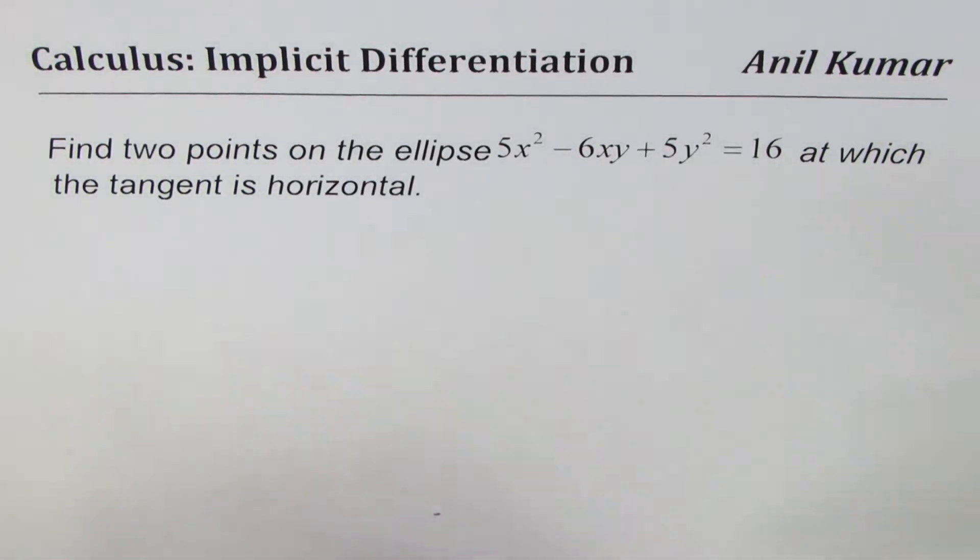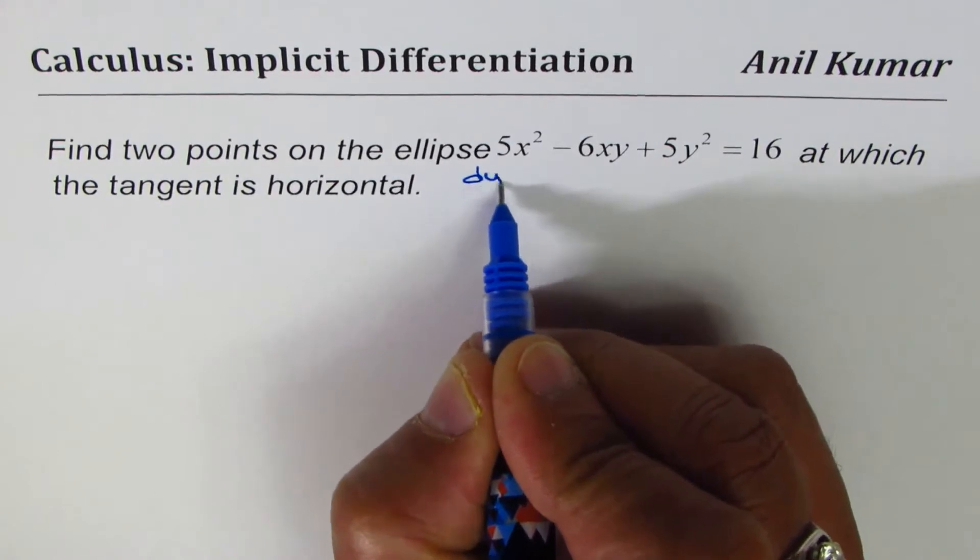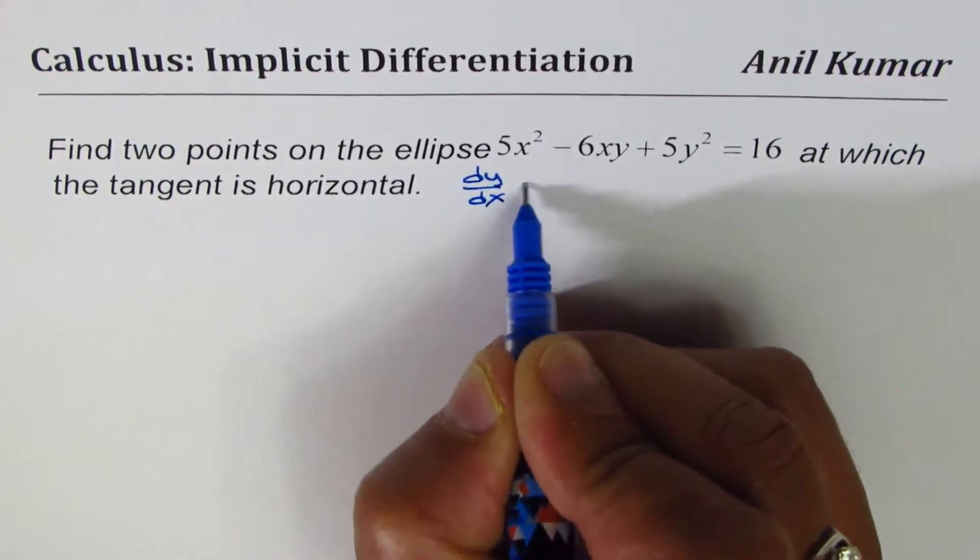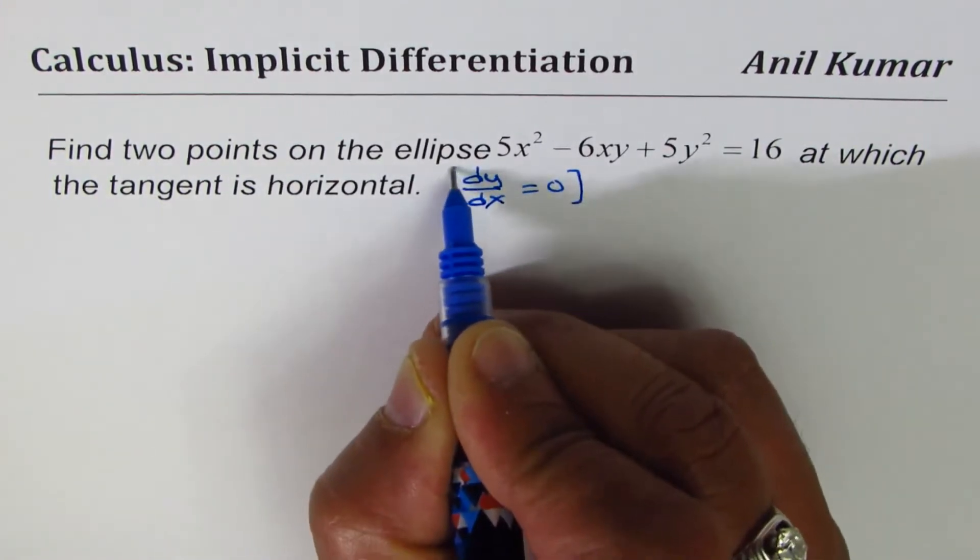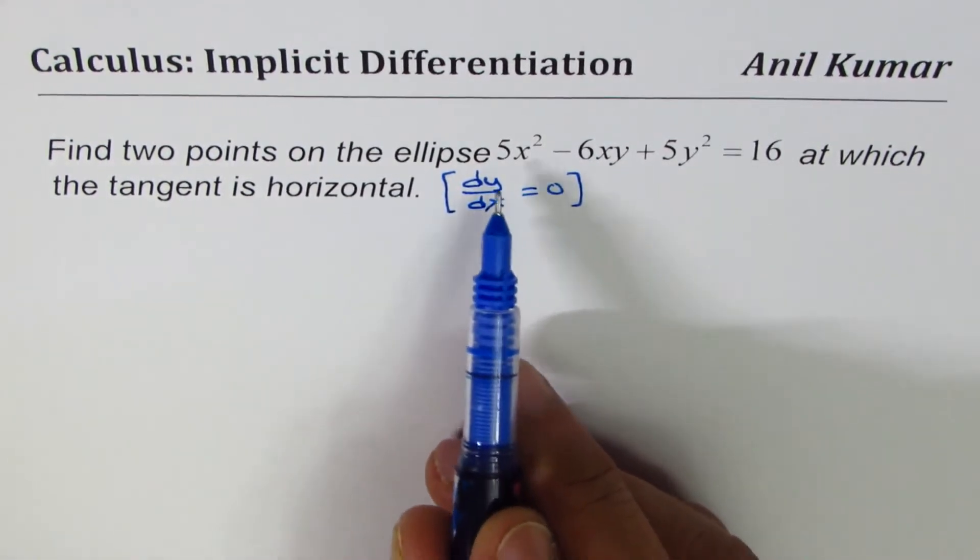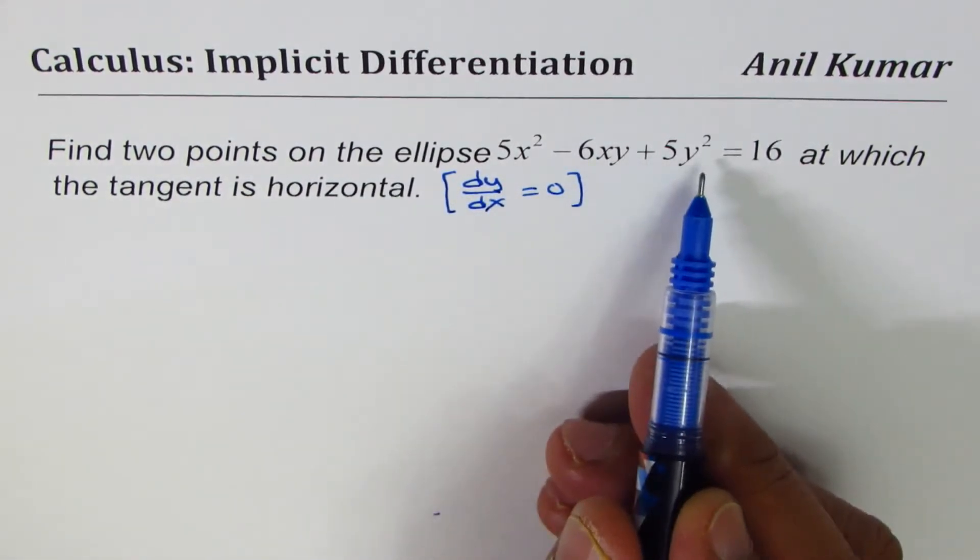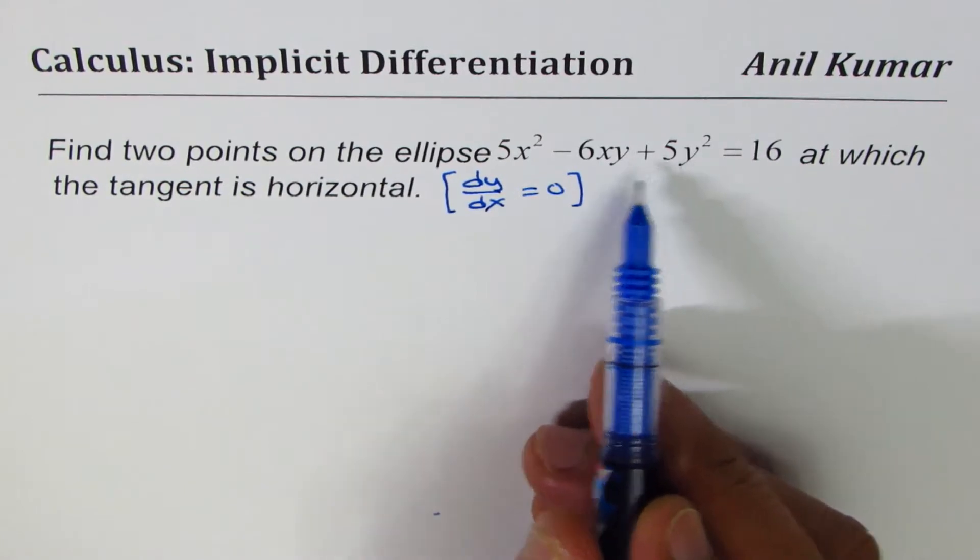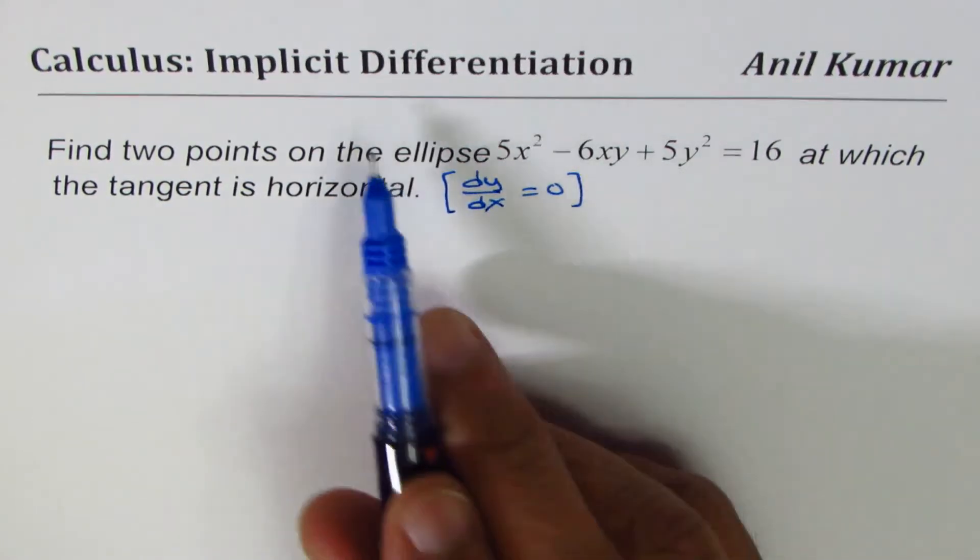Now when we say tangent is horizontal, basically we mean dy/dx equals to 0. This function has a combination of x and y and it is very difficult to isolate y, so we will perform implicit differentiation.